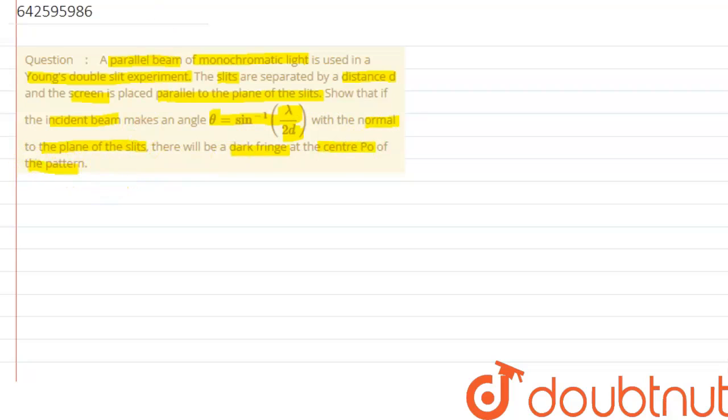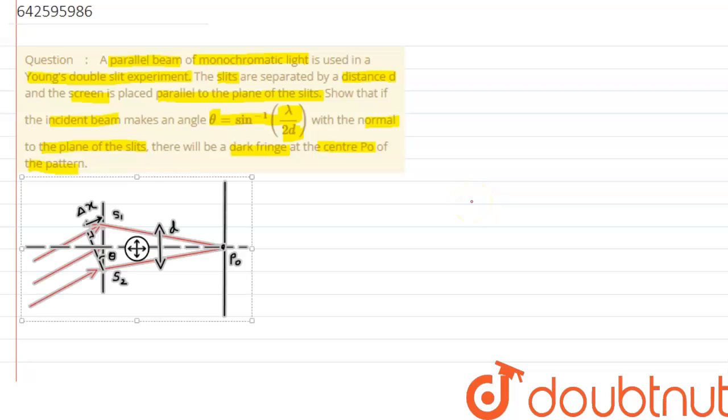So if we try to analyze the given situation with the help of a diagram, here we can clearly see in the diagram there is a screen and here there are two slits S₁ and S₂, and a beam that has been incident at an angle theta has been given, so here it is the angle theta.